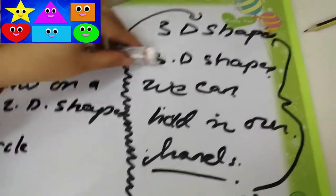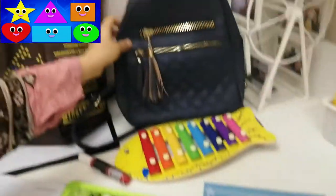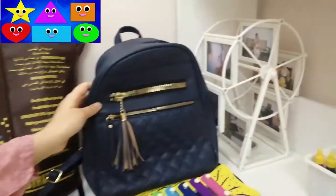The examples of 3D shapes are rubber, the book, the bag. These are all included in 3D shapes.